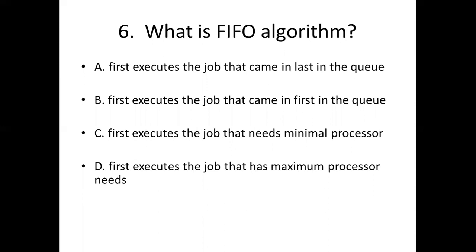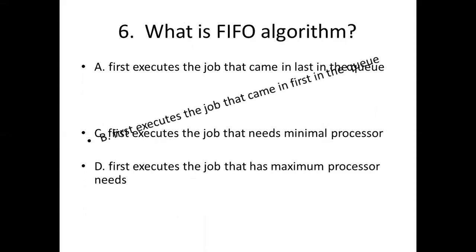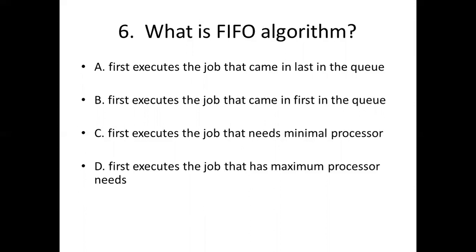Sixth bit. What is FIFO algorithm? Option A: First executes the job that came in last in the queue. Option B: First executes the job that came in first in the queue. Option C: First executes the job that needs minimal processor. Option D: First executes the job that has maximum processor needs. Answer: Option B, first executes the job that came in first in the queue.